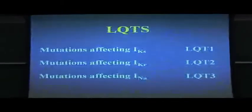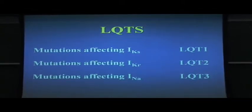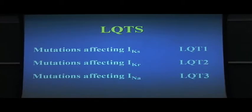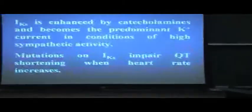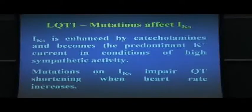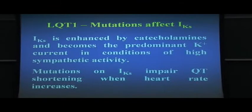Genotype-phenotype correlation is important to develop a common language. One impact of molecular biology was that now we can no longer use the term long QT syndrome generically; we talk of LQT1 for the patients with mutations affecting IKs, LQT2 for patients whose mutations affect the IKr current, and LQT3 if the sodium current is involved. IKs is a current that I like very much, and I like it also because it's the only current that allows me to teach molecular biology to my four-year-old granddaughter. IKs is enhanced by catecholamines, becomes the predominant potassium current in conditions of high sympathetic activity, and mutations on IKs impair QT shortening when heart rate increases.